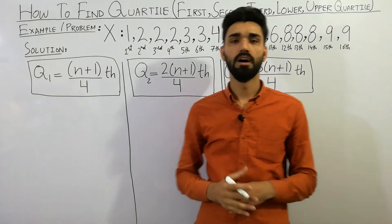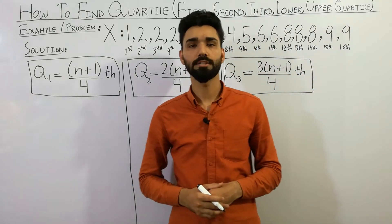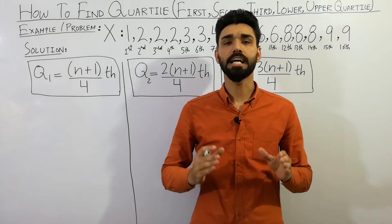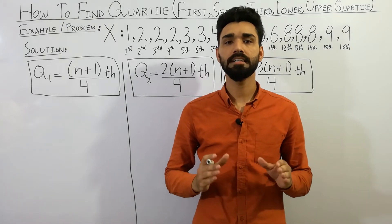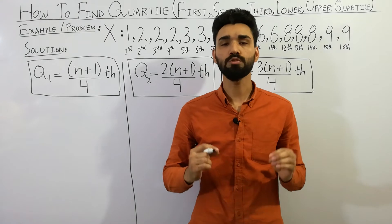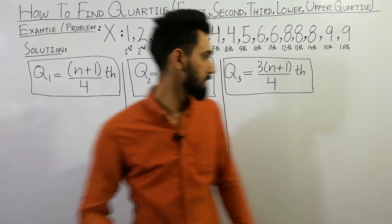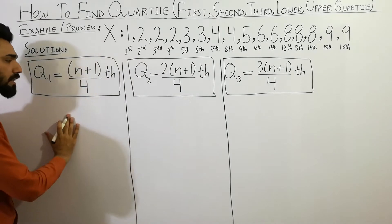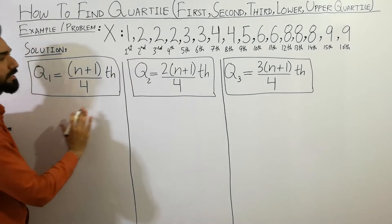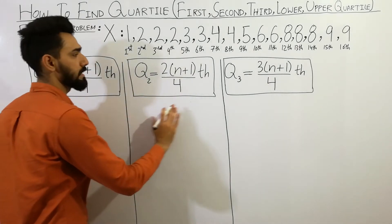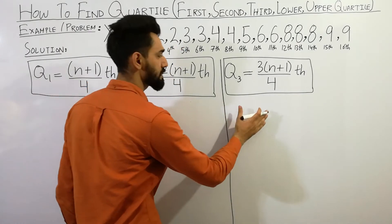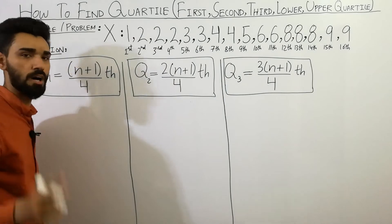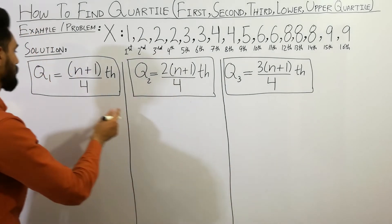Hey guys, welcome to my YouTube channel Asad International Academy. Today, I am going to clearly explain how to find the quartiles: first quartile, which is also called the lower quartile, second quartile, and third quartile, which is also called the upper quartile. So, without wasting any time, let's solve the lecture.